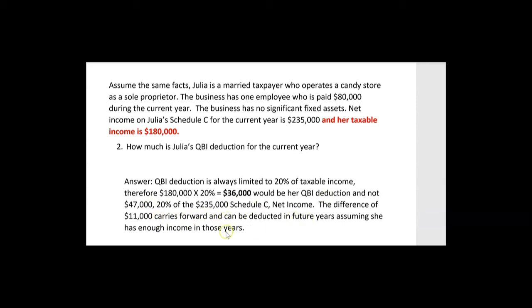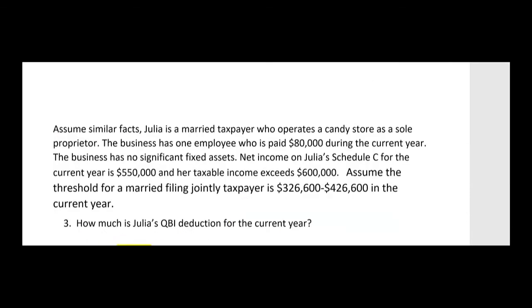The difference of $11,000 will carry forward and can be deducted in future years, assuming she has enough income in those years. You can carry over the excess QBI deduction whenever taxable income limits the QBI deduction compared to the Schedule C net profit — like in this situation where taxable income is $180,000 and Schedule C profit is $235,000. We're limited to a $36,000 deduction this year, but we can carry over the other $11,000. So the answer to question two is a $36,000 QBI deduction with a $11,000 carryover.